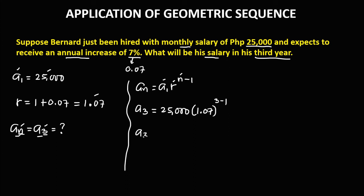Simplifying, a sub 3 is equal to 25,000 times r, where r is 1.07, to the power of 3 minus 1, which is 2. Now we solve for a sub 3.